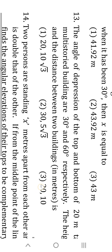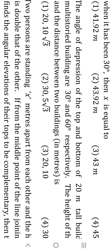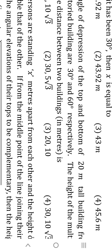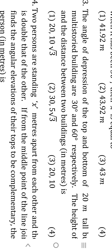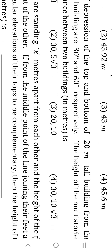Thirteenth question: the angle of depression of the top and bottom of a 20-meter tall building from a building are 30° and 60°. The 20-meter building — half of that is 10. The answer involves 10√3. The 20-meter building, half of it is 10, and the answer is 10√3.